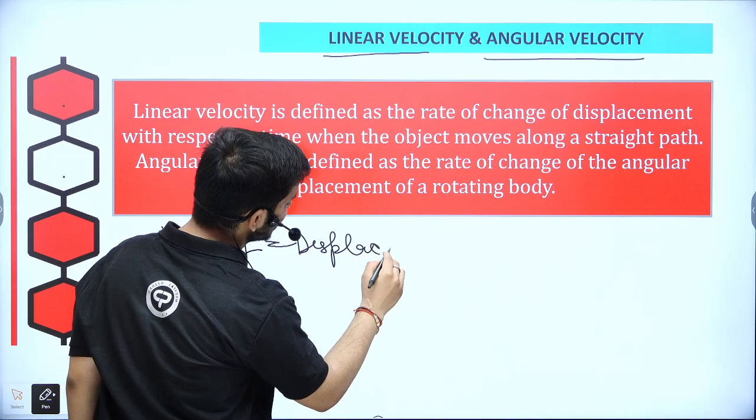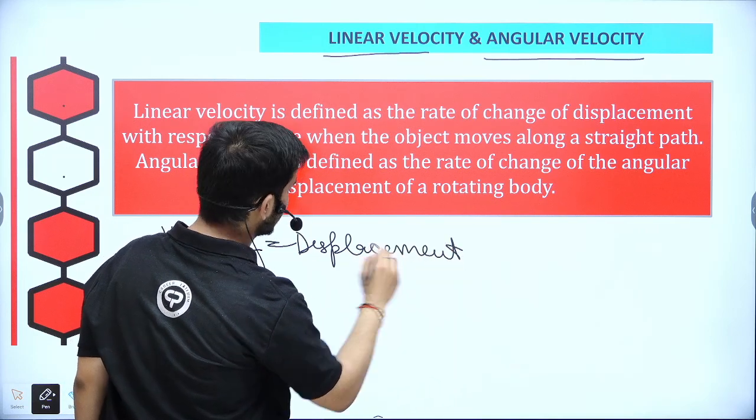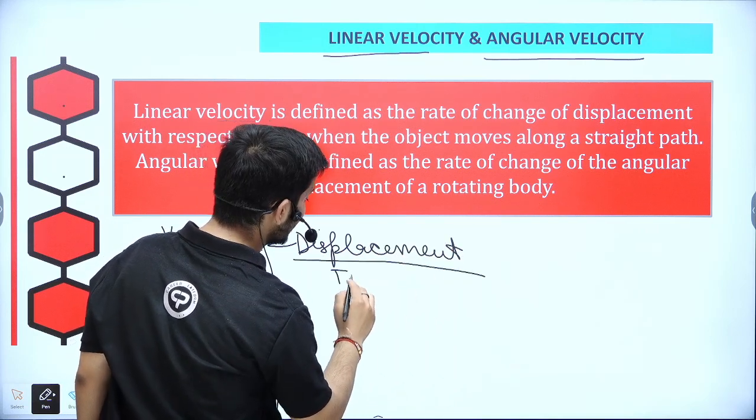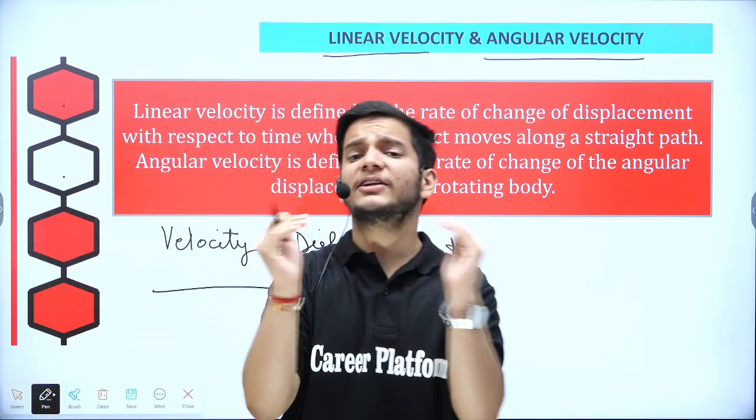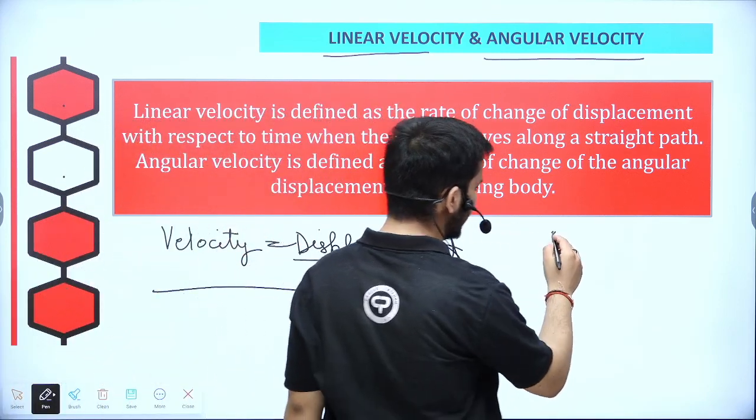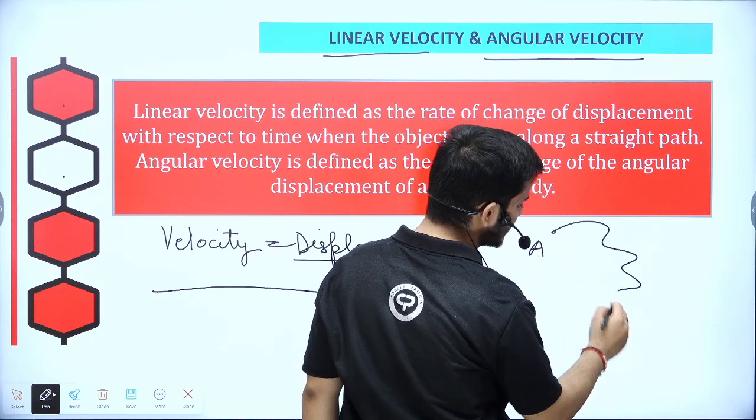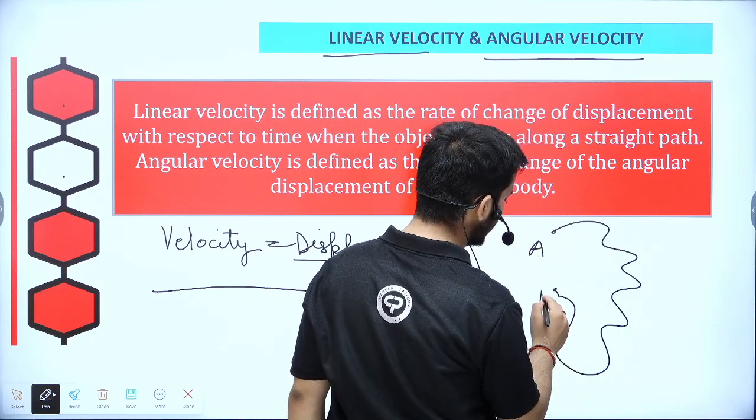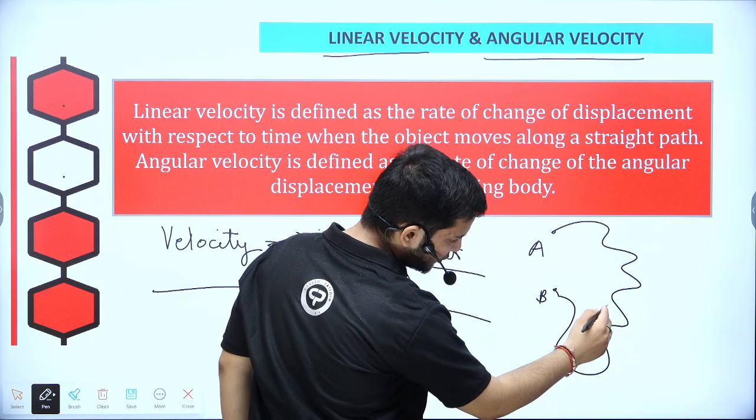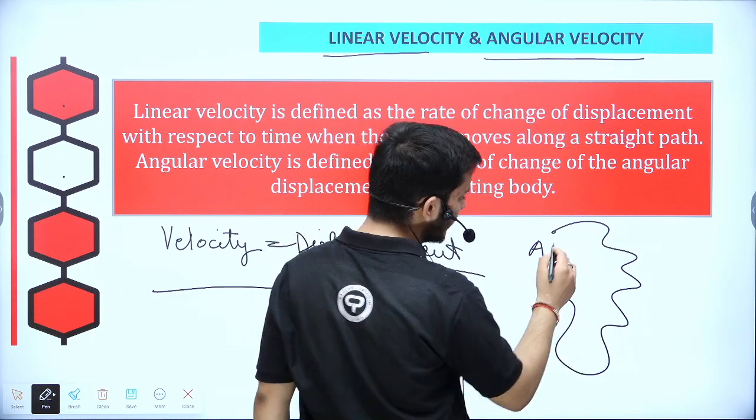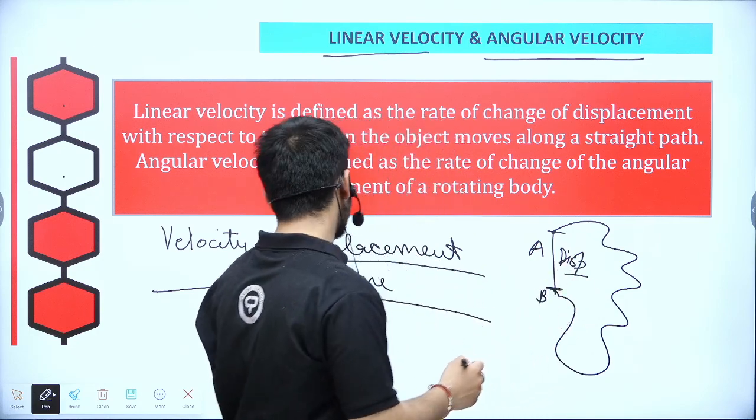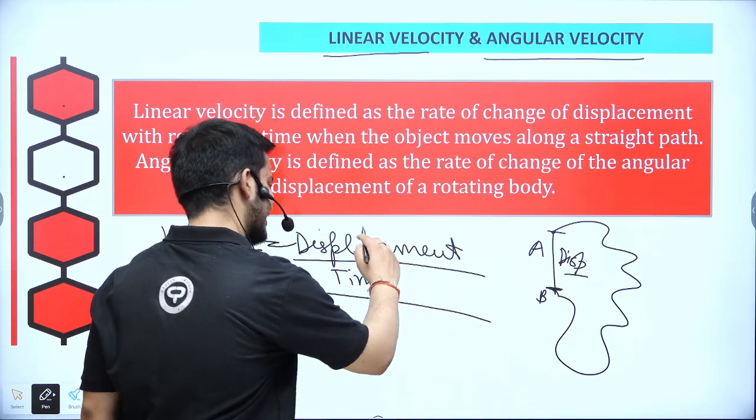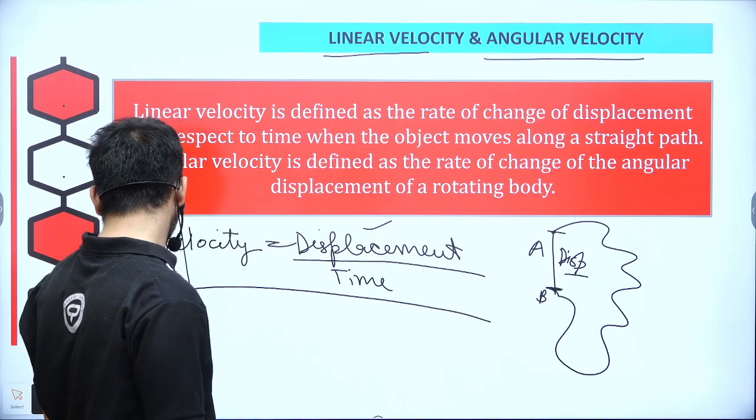So what is the difference between displacement and distance? Distance is the path covered, whereas displacement is the shortest path covered. So I have covered the path, the shortest distance. If my point is A, I go on B point, so I have covered the distance. The path traveled will be my distance, and the shortest distance will be my displacement. So what do I do in velocity? Just displacement.